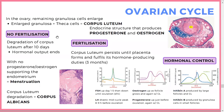If not fertilized, the granulosa cells and theca cells left behind in the ovary form the corpus luteum, which produces progesterone and estrogen. Until implantation and until the placenta forms, progesterone and estrogen from the corpus luteum maintain the uterine walls to sustain pregnancy. If there's no fertilization, the corpus luteum degrades in about 10 days, and without hormonal output the endometrium is shed.